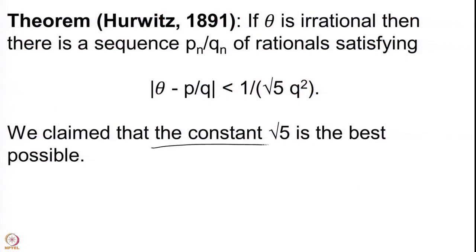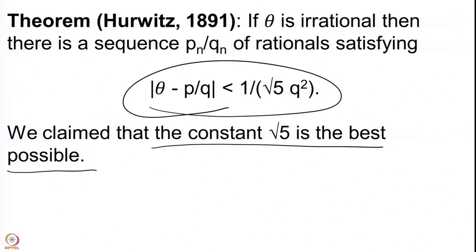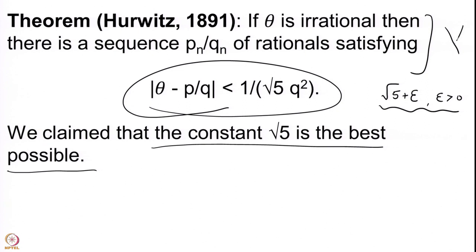What do we have to prove? We want to prove that √5 is the best possible constant. That means, if we change √5 to √5 + ε for any positive ε, then the theorem does not hold.